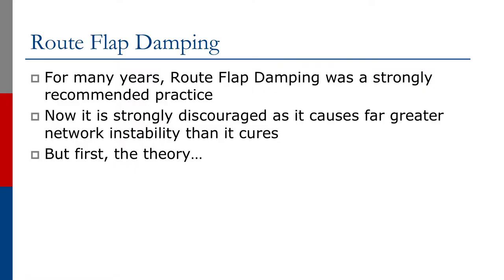As mentioned in the introduction, route flap damping was considered one of the BGP scaling techniques. It was introduced in the mid-90s to solve a particular problem that major network operators were facing at the time. Through the mid and late 90s, it was a strongly recommended practice as it provided significant savings on early router CPUs. But today, it is strongly discouraged as it causes far greater network instability than it actually cures.